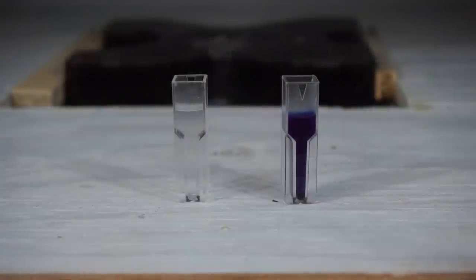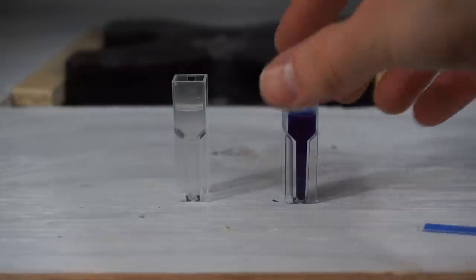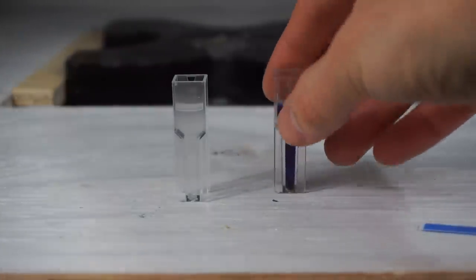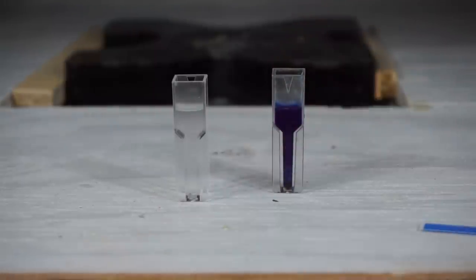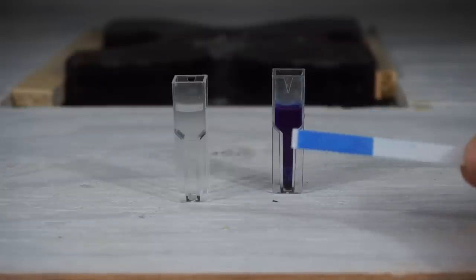Okay, so this test kit, it had two methods to test. You can look at the strip and then after about 15, 30 minutes, you can also look at the color of the cuvette and you can see it's just dark blue. So we know for sure this has more than 10 parts per million of cyanide in it.